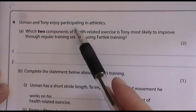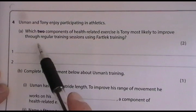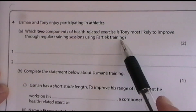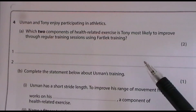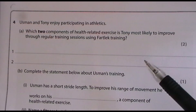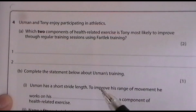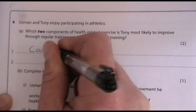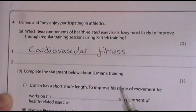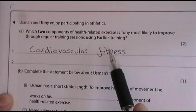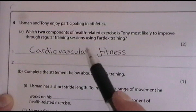Exam question: Usman and Tony enjoy participating in athletics. Which two components of health-related fitness is Tony most likely to improve through regular fartlek training? Fartlek training involves varying the speed — combining sprints, jogs and walks — which is very good for elevating the heart rate and working cardiovascular fitness. So if Tony trains with fartlek regularly, he will certainly improve his cardiovascular fitness. With fartlek training he's also likely to improve his muscular endurance, as the sustained varying effort works the muscles repeatedly over time.